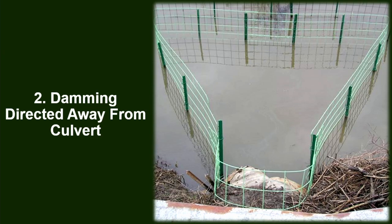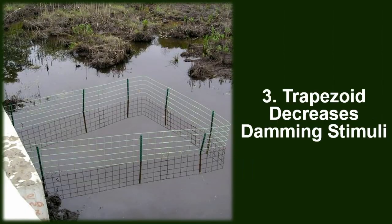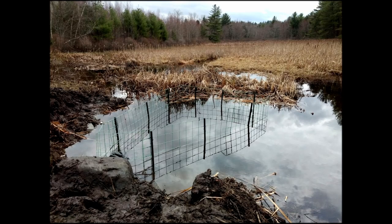Beavers work like someone damming a river — you start where the current is shallowest and work to the middle. By having them dam away from the culvert, it goes against their instincts, and you can see them dam a foot or two then give up. The trapezoidal shape reinforces this. Here's an example where the water was over the road — you can see how high it got from the blocked culvert. After the fence was installed, they haven't dammed it since, and this is a few years old now.